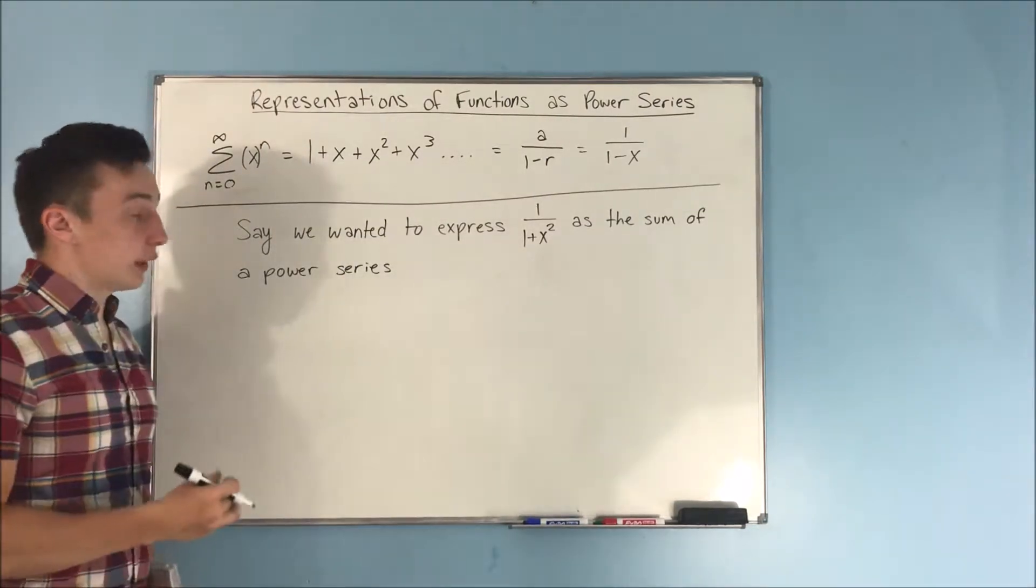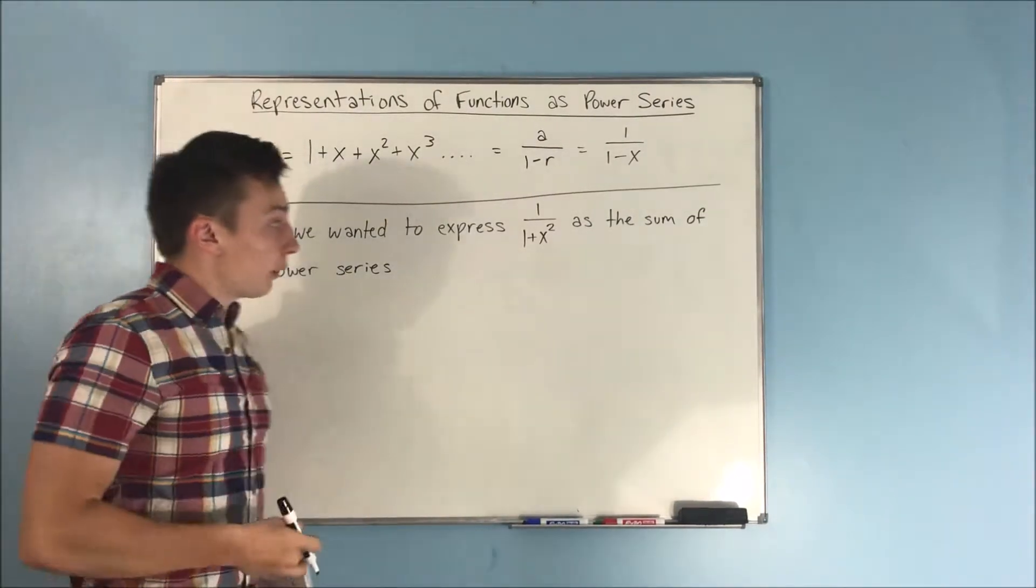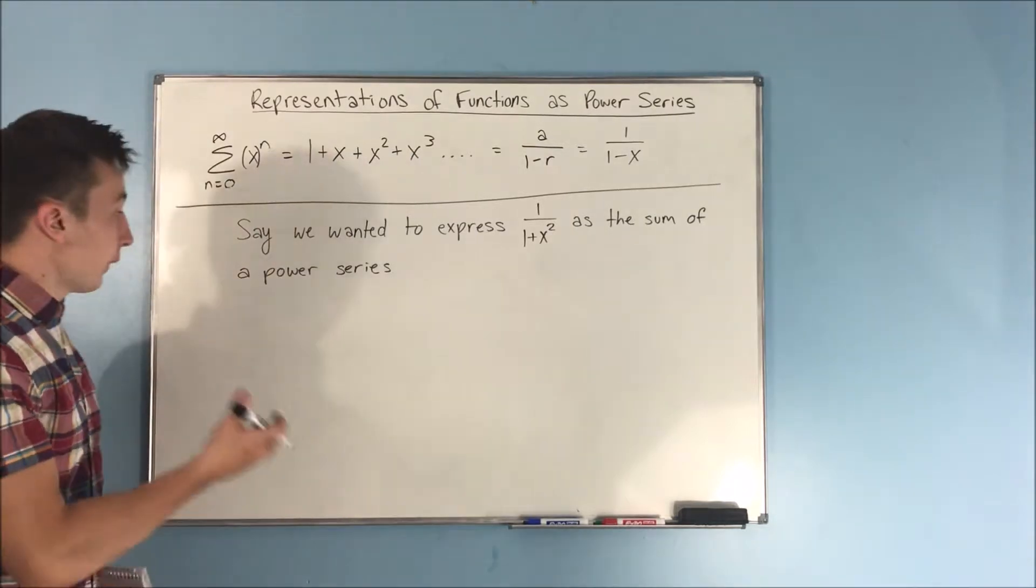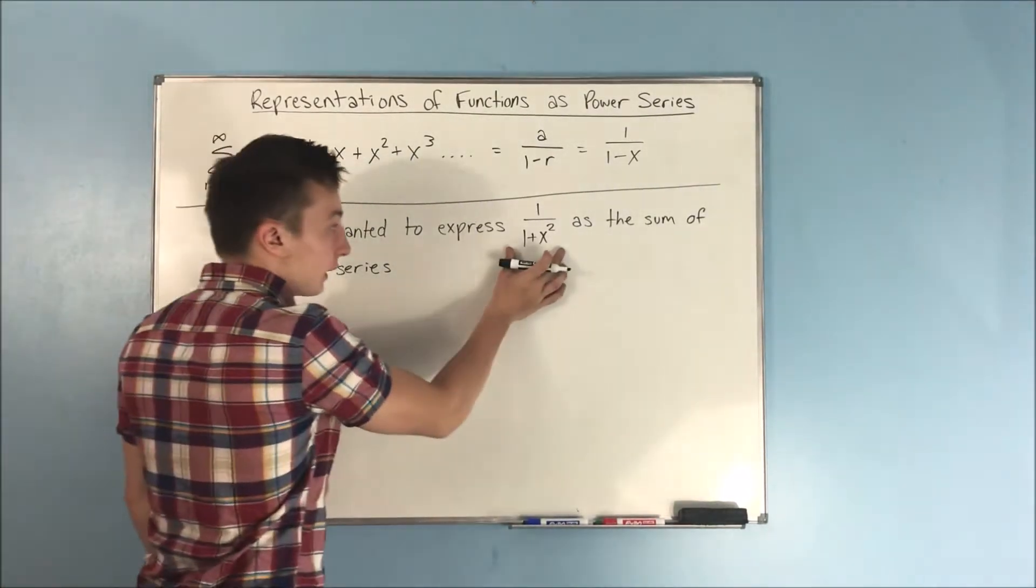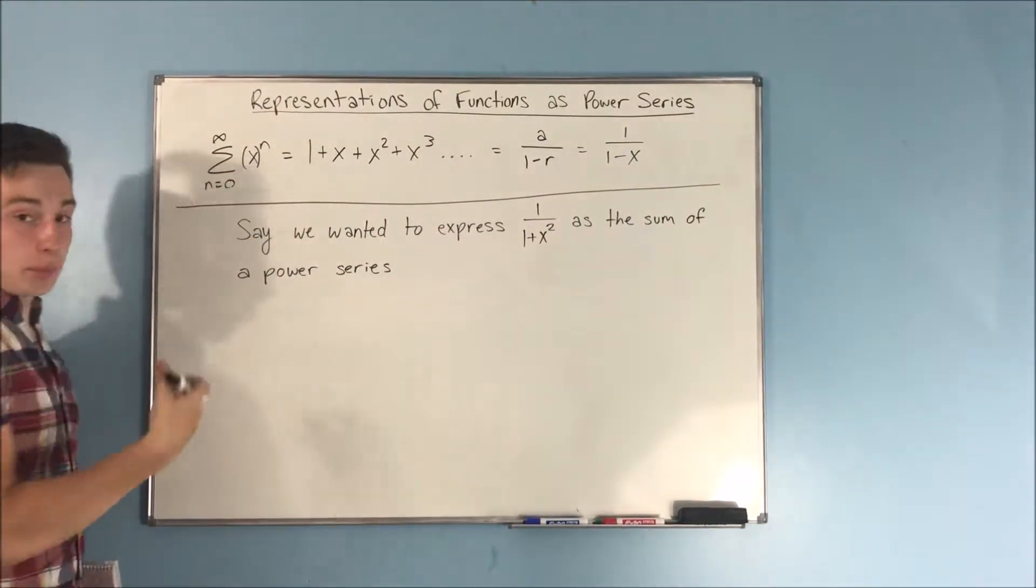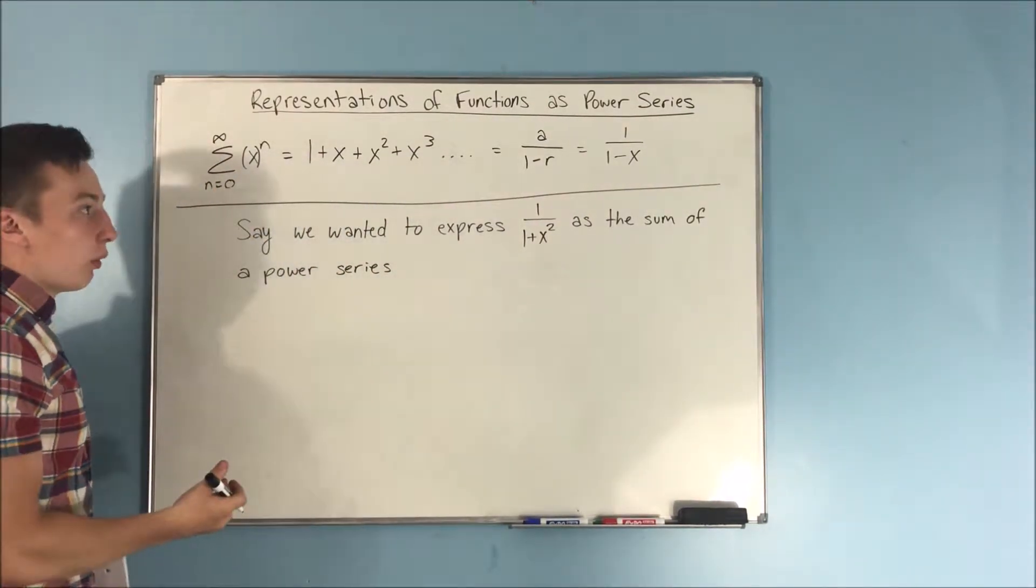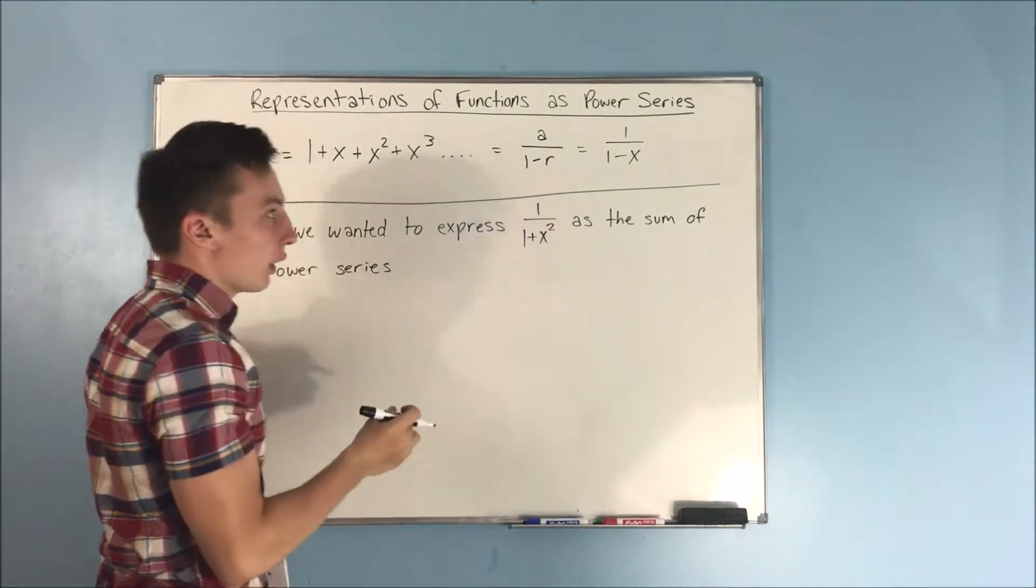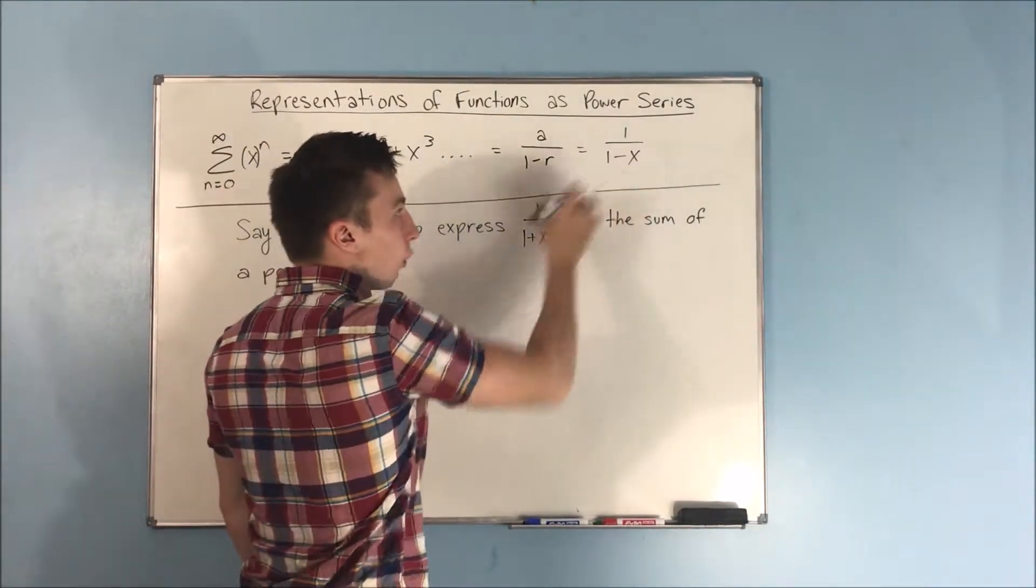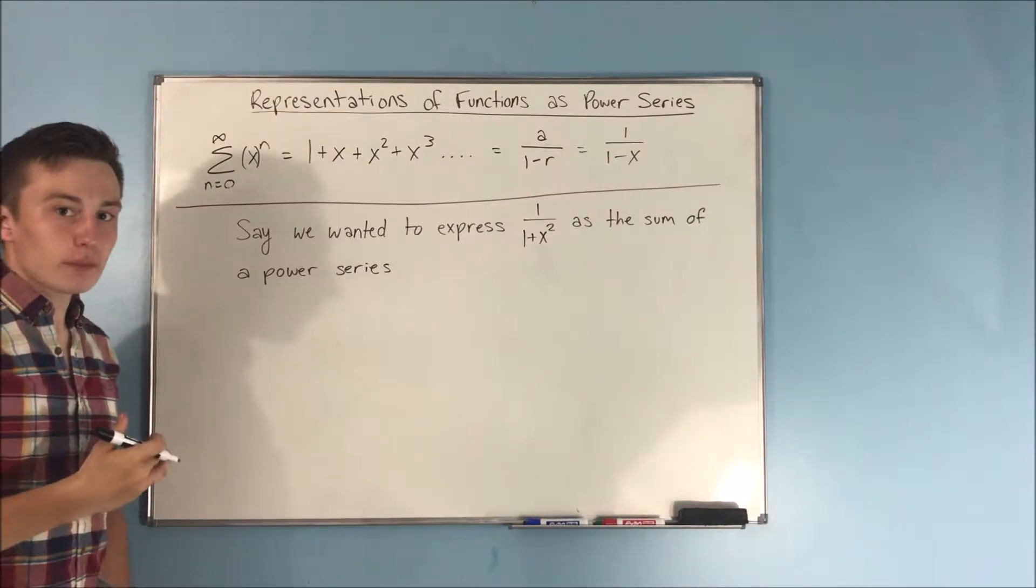So say that we wanted to express 1 over 1 plus x squared as the sum of a power series. Let's see if we can get something like this to end up being a power series. Well, what we want to do is we want to make this 1 over 1 plus x squared look kind of like this 1 over 1 minus x.